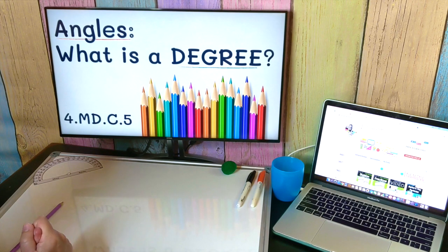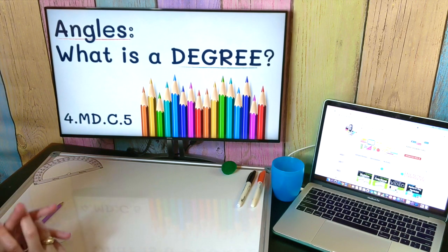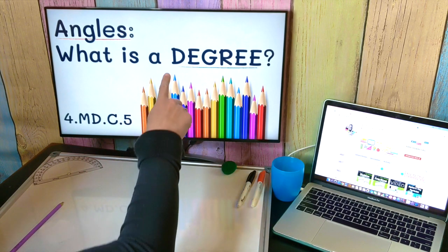Alright friends, we've got two new words that we're going to learn about today and talk about what they mean. We're gonna look at what an angle is and we are going to look at what in the world is a degree.